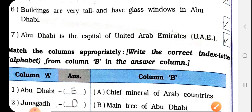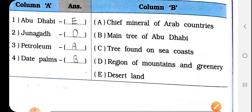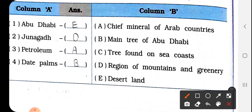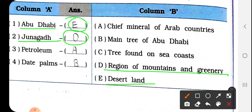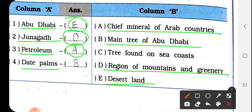Matching exercise: No. 1, Abu Dhabi — answer is E, desert land. No. 2, Junagadh — answer is D, region of mountains and greenery. No. 3, Petroleum — answer is A, chief mineral of Arab countries. No. 4, Date palms — answer is B, main trees of Abu Dhabi.